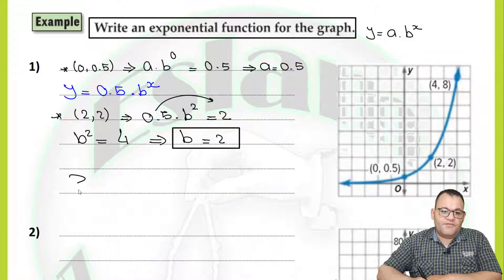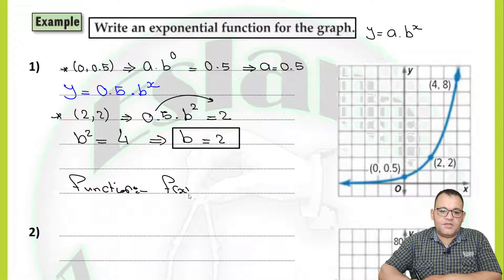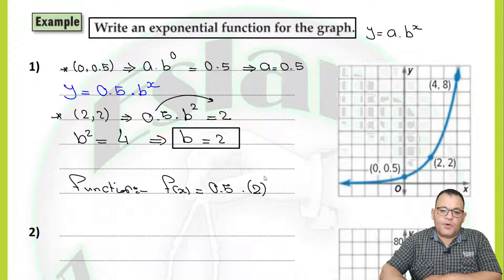So we can say that the function will be f(x) equals a, which is 0.5, times b, which is 2, to the power x. And that will be the function for this graph.